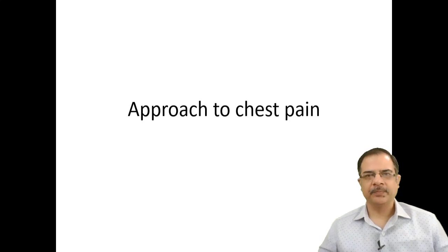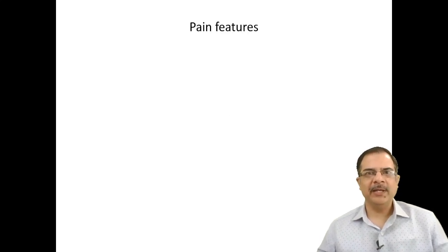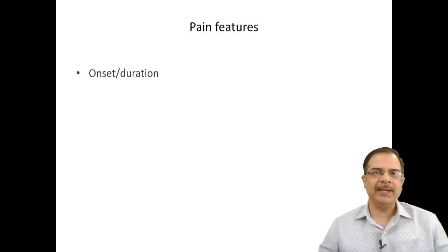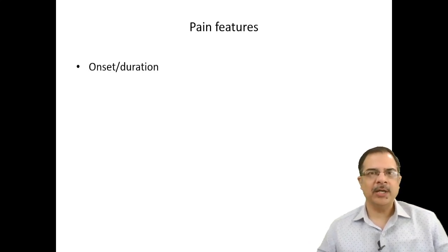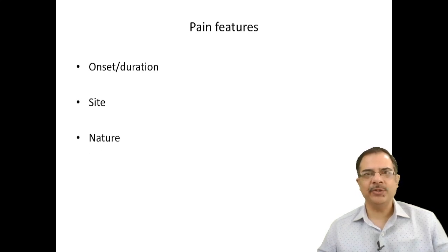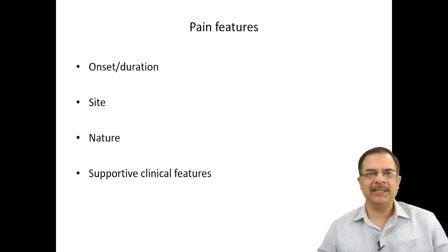The causes of chest pain can be differentiated on the basis of these features. Make it a habit to ask about onset and duration, the site of the chest pain, the exact nature of the pain, and the associated clinical features — meaning other symptoms or important clinical signs. With the help of these four points we can identify the etiology of different types of chest pain.